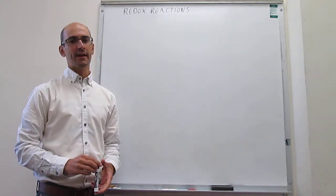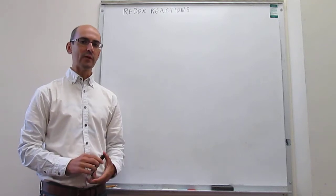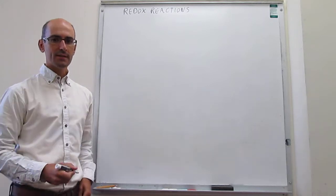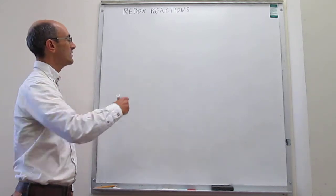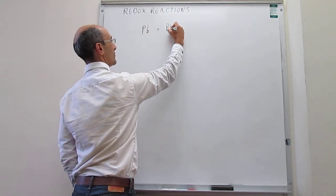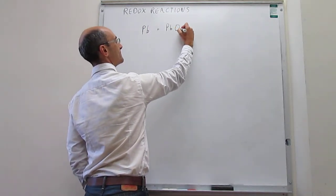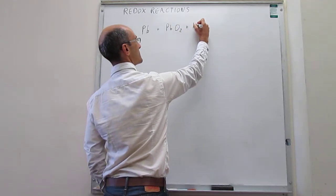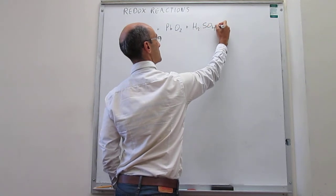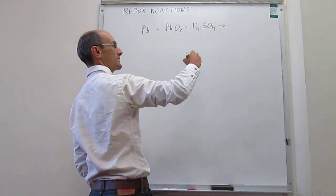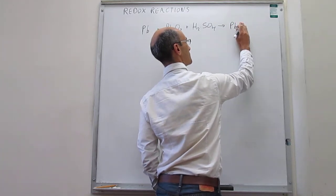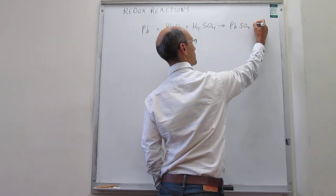In this video we take a look at a couple of particular examples of redox reactions that are of interest. Let's try to balance the following reaction: lead with lead 4 oxide and sulfuric acid to generate lead sulfate and water.